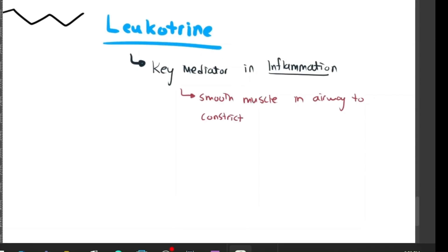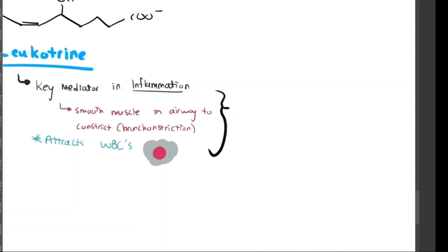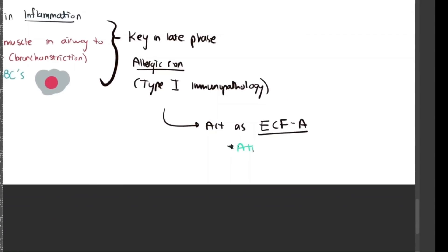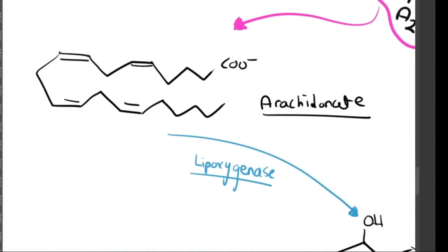How do we see this? Bronchoconstriction via smooth muscles in the airway. We also see that they attract other white blood cells—that's that chemokine type of factor. That's an example of a white blood cell, usually a monocyte or a macrophage. We see this is key in the late phase allergic reaction of type 1 immunopathologies, as they basically act as eosinophil chemotactic factors of anaphylaxis along with prostaglandins. These ECFAs basically attract eosinophils, which increase major basic protein, and this ends up increasing inflammation.